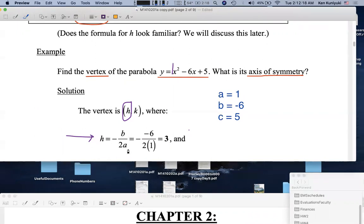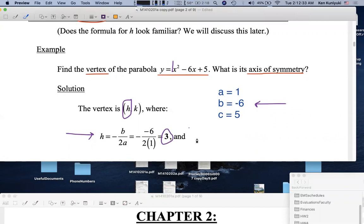Okay, so what's the opposite of b over 2a? It's the opposite of negative 6, not positive 6, over 2 times a is 1. It's a double division. You divide by both. We end up with positive 3. So positive 3 is the x-coordinate of the vertex, h.